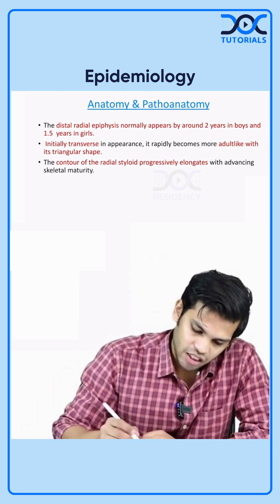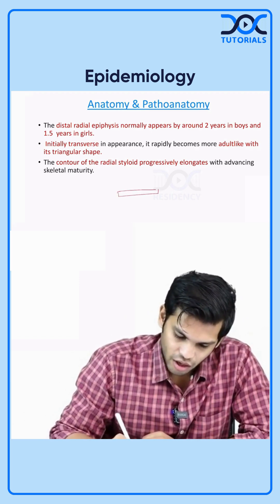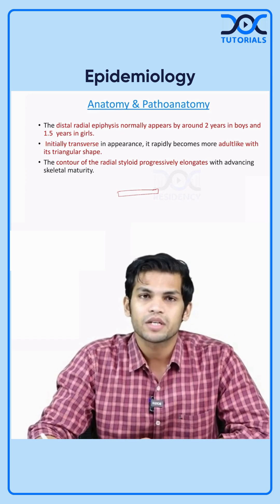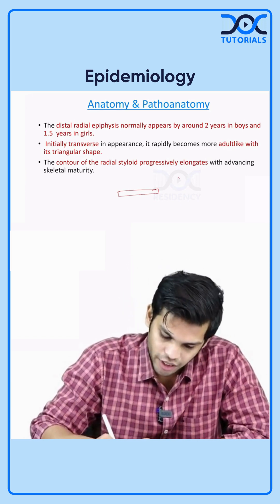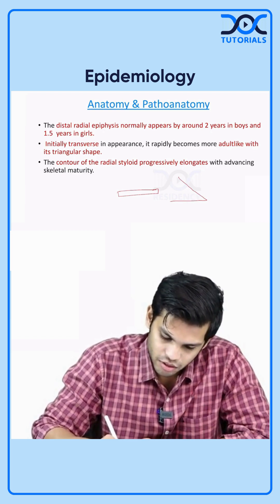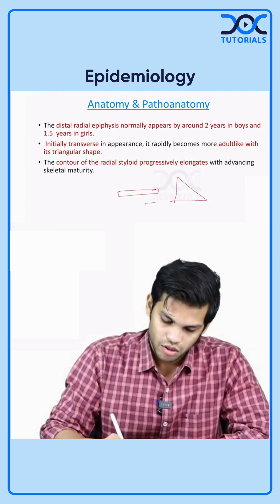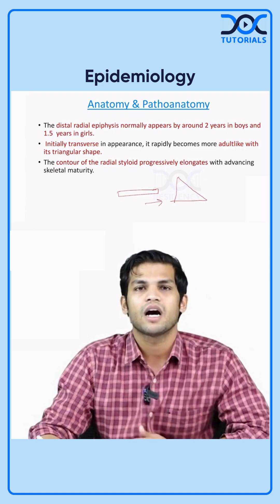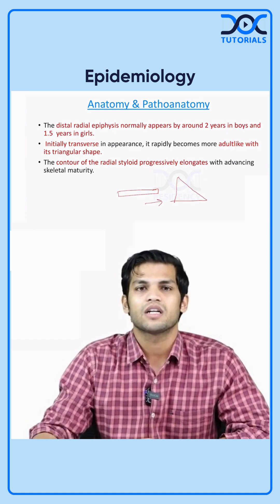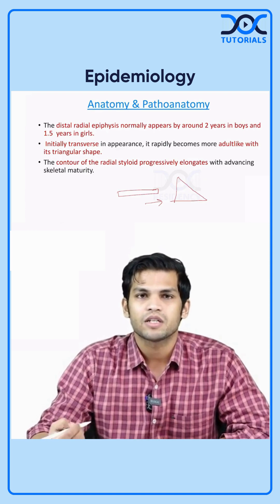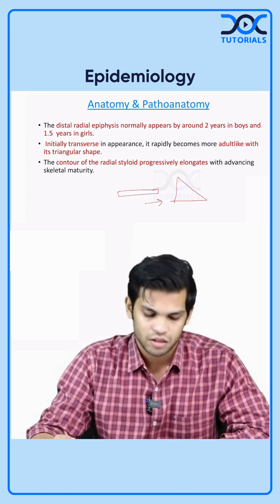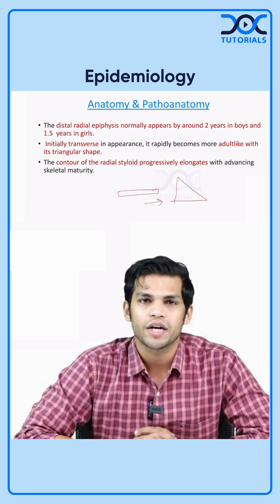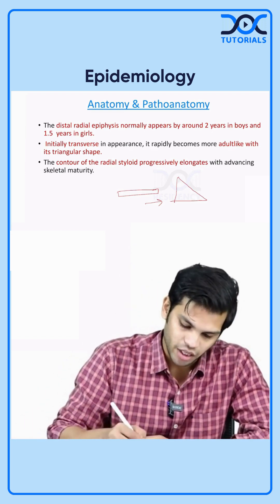Initially, the epiphysis is transverse. Then it rapidly becomes adult-like, triangular in shape. So initially the epiphysis is transverse, and then as the age progresses, the epiphysis becomes triangular in shape like the adult bone. The contour of the radial styloid progressively elongates with advancing skeletal maturity.